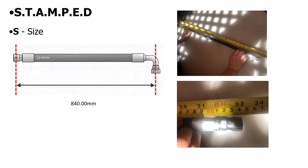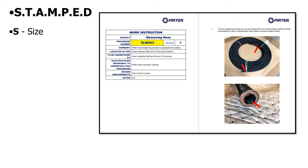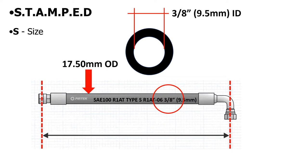Let's look at our STAMPT analysis. Our first section is size. I'm going to need to work out the overall length of the hose and the diameter of the inside and the outside of the hose. Pictured here is a length measurement from seat face to seat face. A quick check of PConnect and we discover a work instruction for measuring and cutting hoses to the correct length. In this case, the inside diameter of the hose is stamped on the lay line — three-eighths of an inch, which equates to 9.5 millimeters.